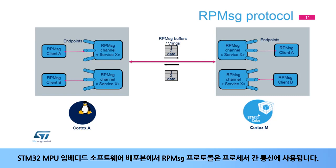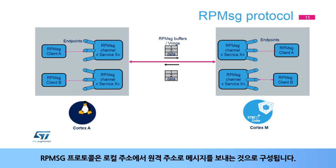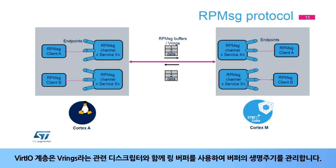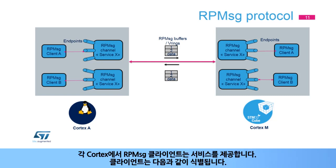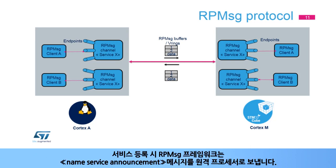In the STM32-MPU embedded software distribution, the RPMSG protocol is used for the interprocessor communication. The RPMSG protocol consists of sending a message from a local address to a remote address. The message is stored in a buffer in the shared memory. The VIRT-IO layer is in charge of the management of the buffer lifecycle using ring buffers with associated descriptors named V-rings. On each Cortex, an RPMSG client offers a service. The client is identified by its service, defined by a service name, or its endpoint, defined by an address identifier and operating callbacks. On service registration, the RPMSG framework sends a name service announcement message to the remote processor.